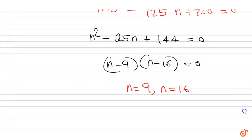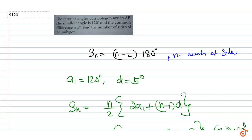Therefore, the number of sides can be either 9 or 16. N is equal to 9 or 16. That is our answer.